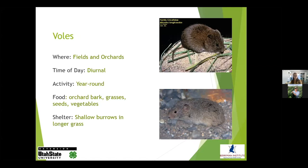Moving on to a very similar species: voles. These guys look like mice and most people think they are mice, but they behave differently. They basically look like mice without tails. We have sagebrush voles, long-tailed voles, and montane voles. The long-tailed vole has a bit of a tail but it's far shorter than the size of its body. They also have ears that don't stick out above their head and relatively small eyes. If you see an animal moving through the environment that looks like it doesn't have ears, eyes, or a tail, that's a vole.